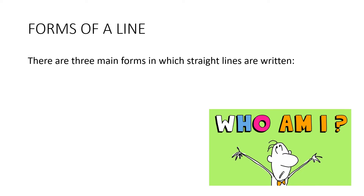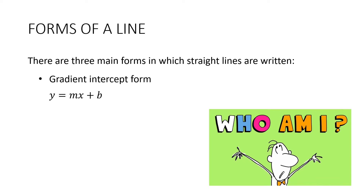Now there are three main forms in which straight lines are written. There's the gradient intercept form, which you would have learned last year: y equals mx plus b. In this case, m stands for the gradient or the slope, and b is the y-intercept, where the line cuts the y-axis.